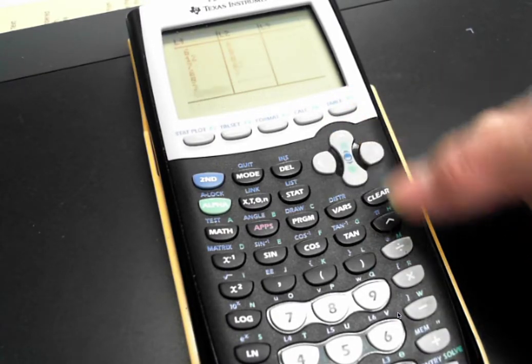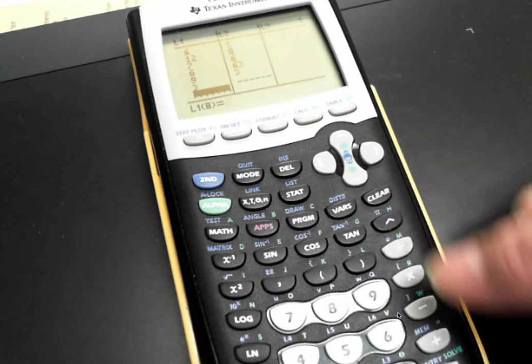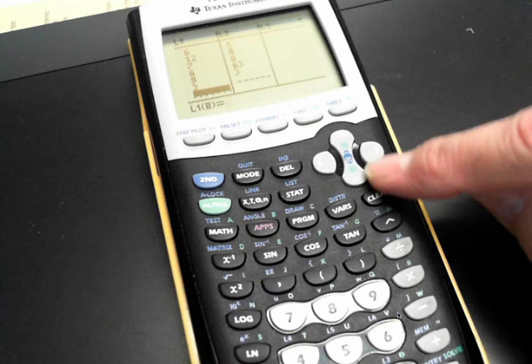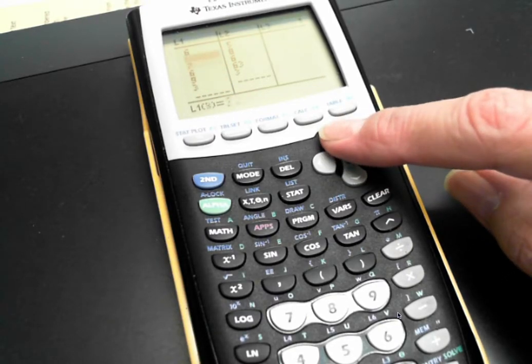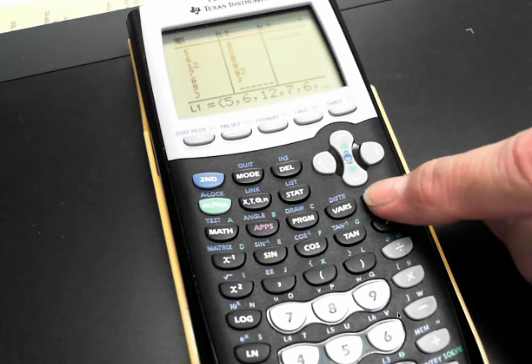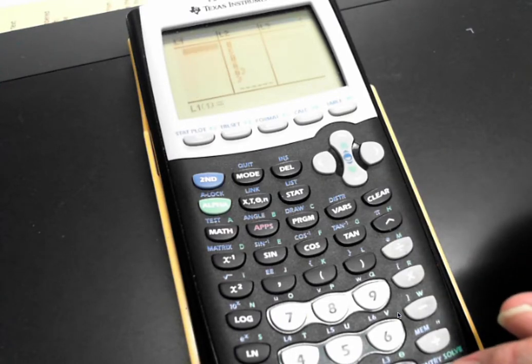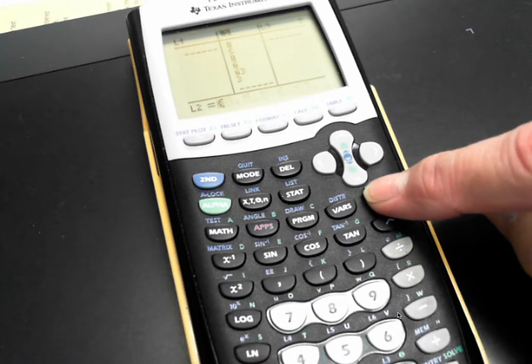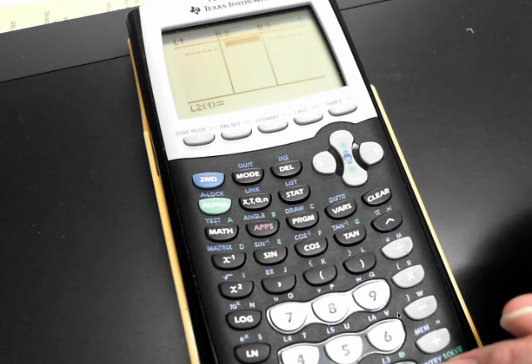You can clear your list by arrowing up and hitting clear. Do not hit delete, because it will delete your list. Arrow up to the top, hit clear, and hit enter. It clears your entire list.